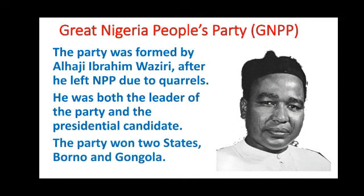The GNPP won two states, and these states were Borno and Gongola. Gongola State has since been divided. Now let's look at another political party — the PRP, the People's Redemption Party.